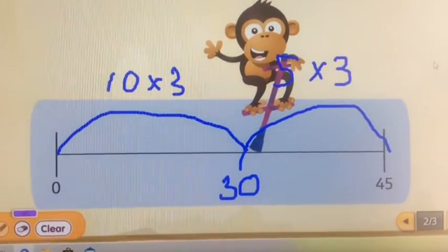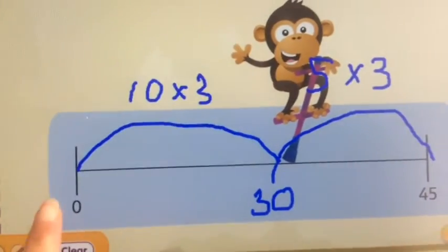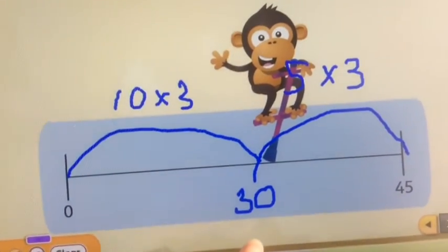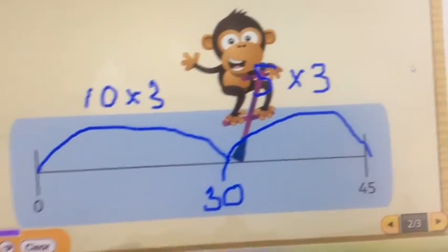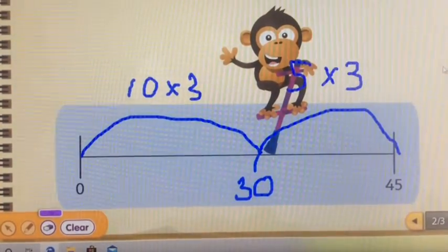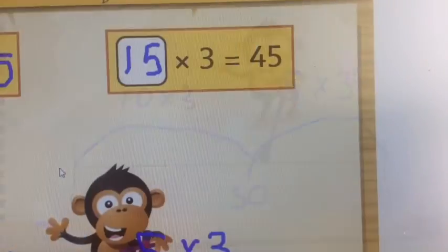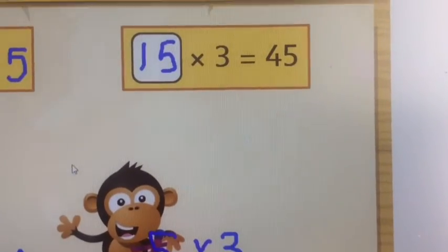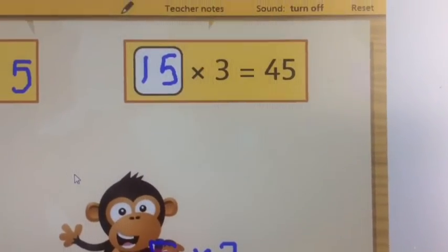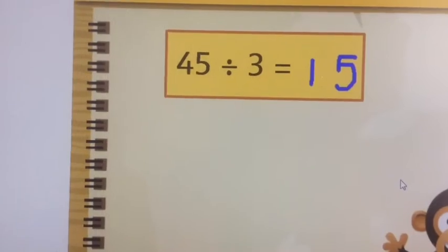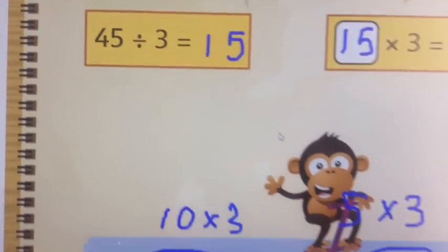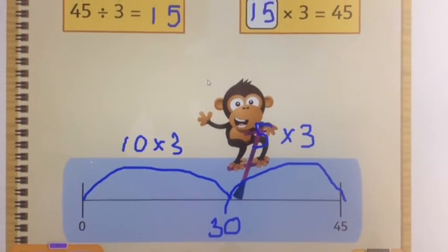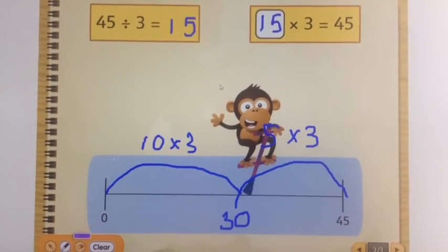This is how Chunky Chimp did it then. He knew that ten times three is 30, and five threes are your 15 here. So all together he did 15 jumps of three. Remember, because you know 15 threes are 45, you know 45 divided by three is 15. Sorry about the wobbly writing. It's really hard to write on the computer rather than the whiteboard.